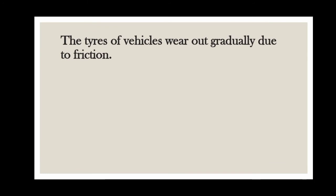The next disadvantage: the tires of vehicles wear out gradually due to friction. When vehicles like cars, buses, trucks, etc. run on the road, there is friction between the surface of tires and the surface of road. The rubbing of tires with the road keeps on breaking tiny pieces of rubber from the tire's surface gradually. Ultimately, the threads present on the surface of the tire are worn out and the tire becomes bald. The tires of bicycles also wear out gradually due to friction with the road.